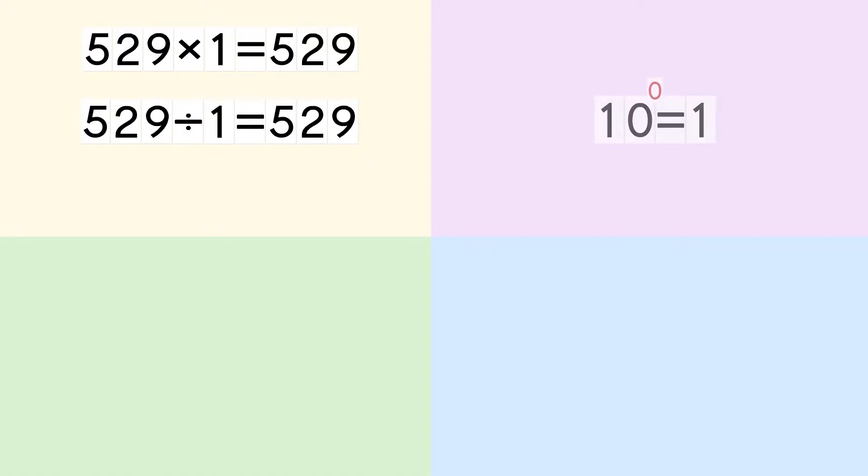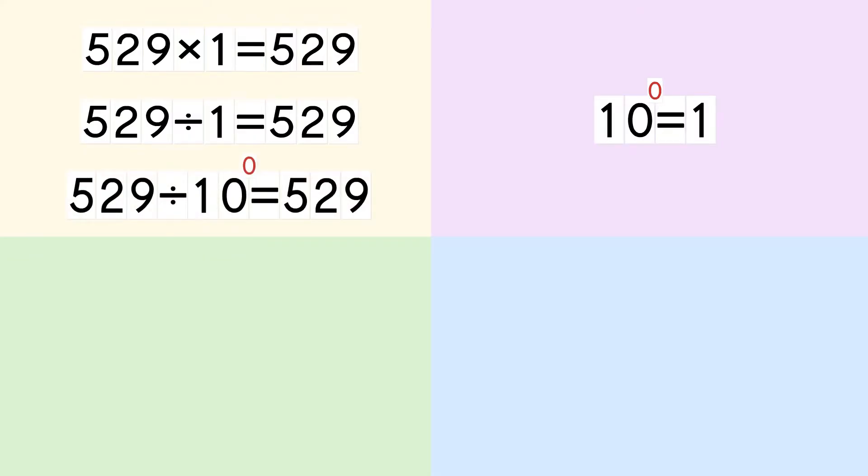When we multiply a number by 1, we get the same number. When we divide by 1, we get the same number too. The decimal point does not move. 1 equals 10 to the power of 0, so we can rewrite 1 as 10 to the power of 0. A number divided by 10 to the power of 0 is the same number — the decimal does not move.